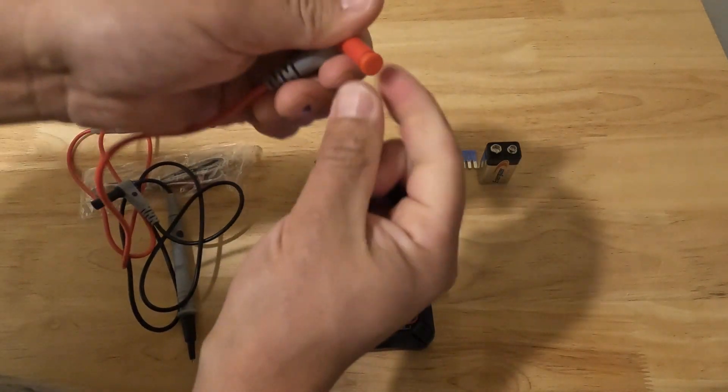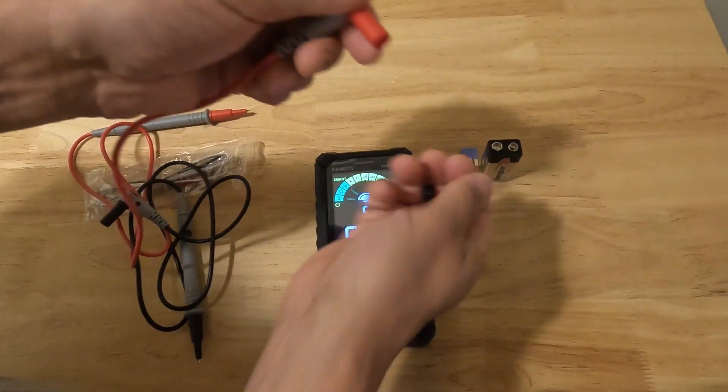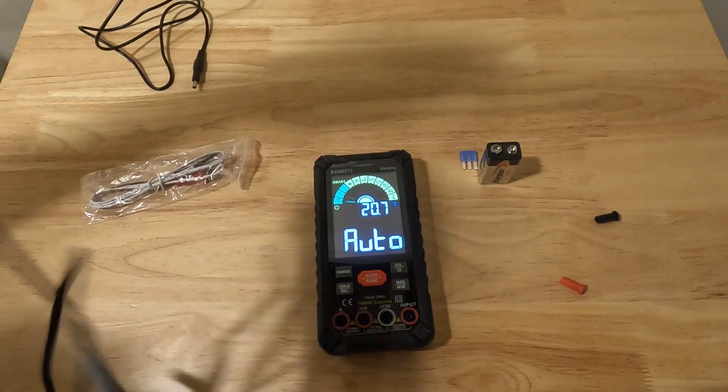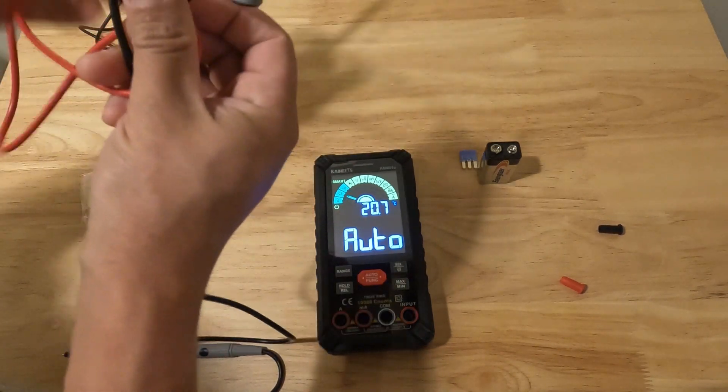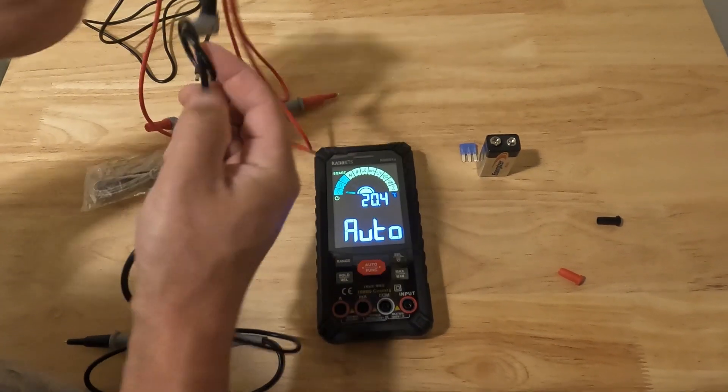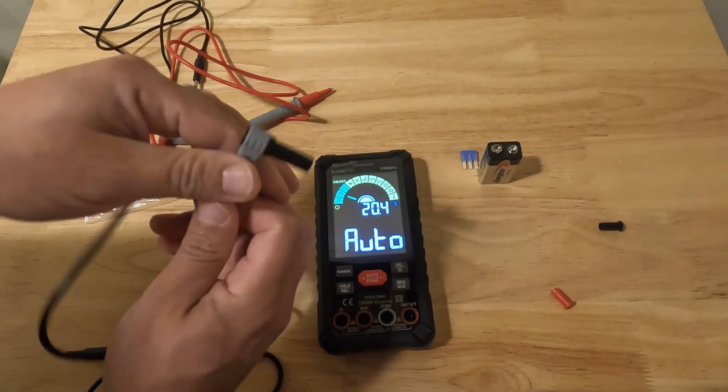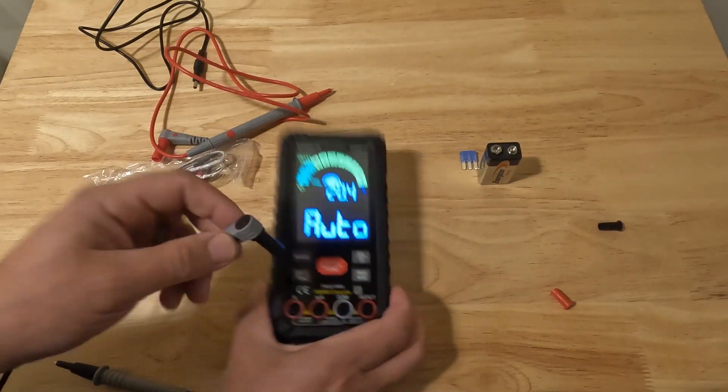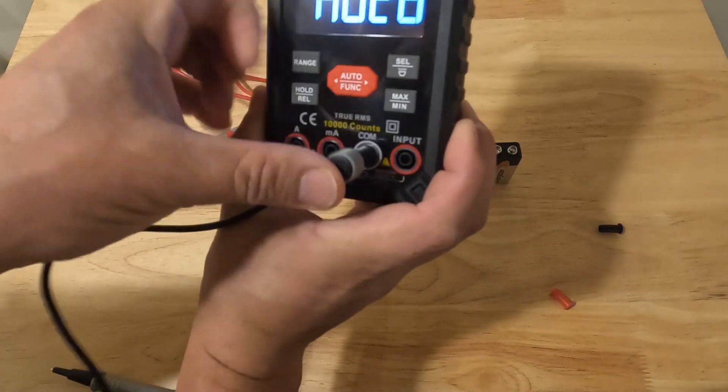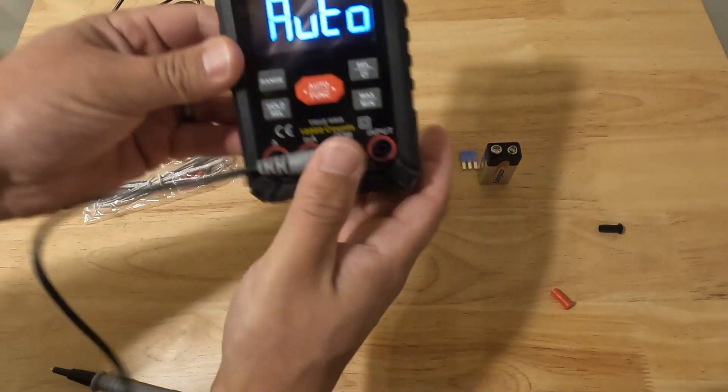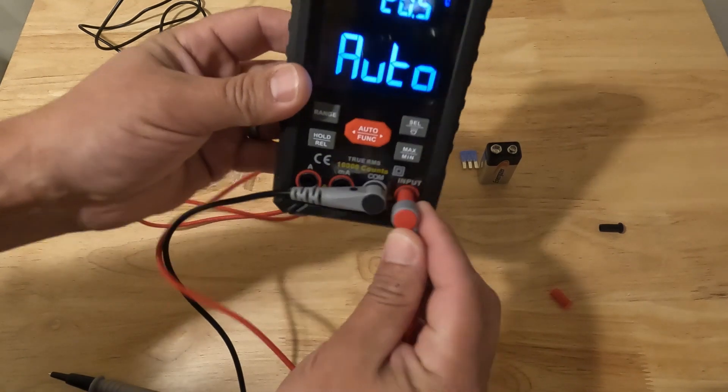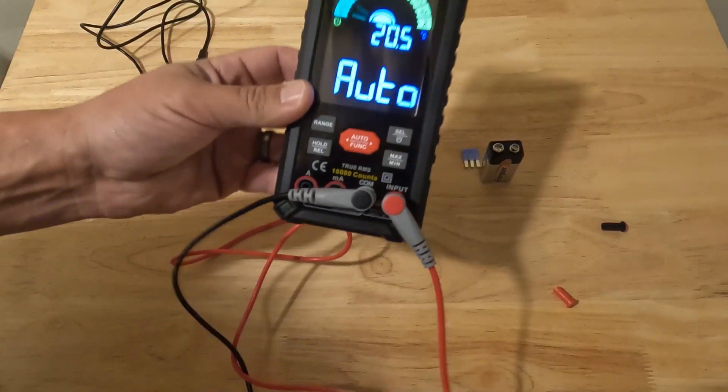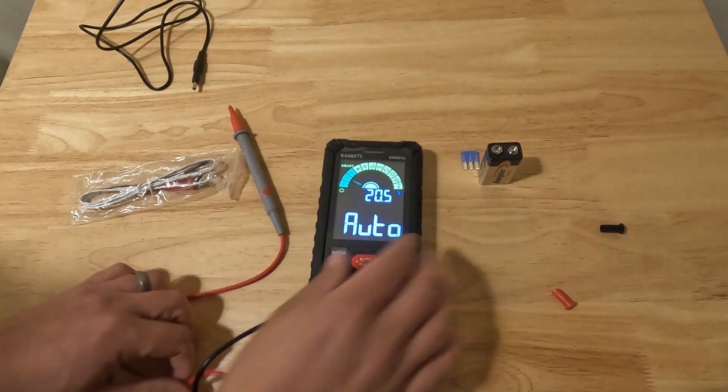So for these three measurements we're just going to undo these little plastic pieces. Our black wire is going to go into the COM port, and then our red probe is going to go into the input. And now it's set up ready to go.